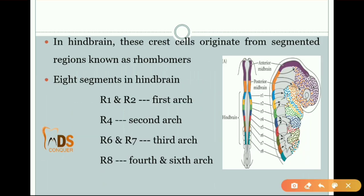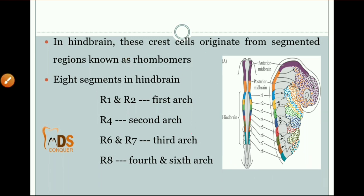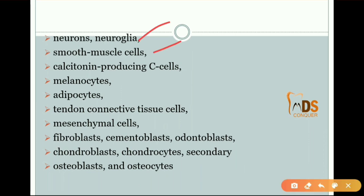In the hindbrain, the crest cells originate from segmented regions known as rhombomeres. There are eight segments in the hindbrain, as you can see in this diagram. R1 and R2 are derived from the first arch, R4 from the second arch, R6 and R7 from the third arch, and R8 from the fourth and sixth arches. These cells can give rise to neurons and neuroglia, smooth muscle cells, calcitonin-producing cells, melanocytes, adipocytes, tendon connective tissue cells, mesenchymal cells, fibroblasts, cementoblasts, chondroblasts, osteoblasts, and osteocytes.